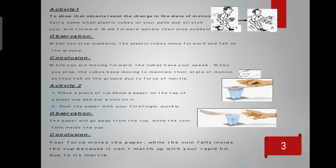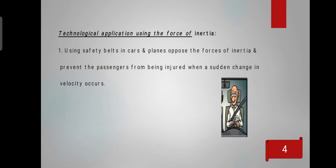We have technological applications of inertia. We use safety belts in cars, and safety belts oppose the forces of inertia and prevent the passengers from being injured when sudden changes in velocity occur. So it's very important in our cars we must use safety belts.